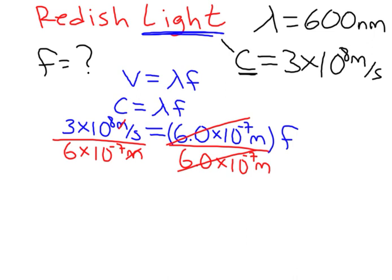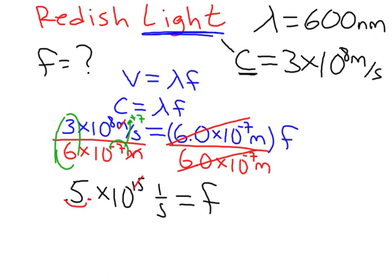And a couple things to note. Well, first of all, 3 divided by 6 is 0.5. And when the 10 to the eighth is divided by 10 to the minus seventh, this guy pops up and becomes a plus 7. So we end up getting 7 plus 8 is 15, so 0.5 times 10 to the fifteenth with units of 1 over seconds equals the frequency. And if I bring this guy forward one, then that becomes 14. And I get a final answer of frequency for a 600 nanometer wavelength is equal to 5 times 10 to the fourteenth hertz.